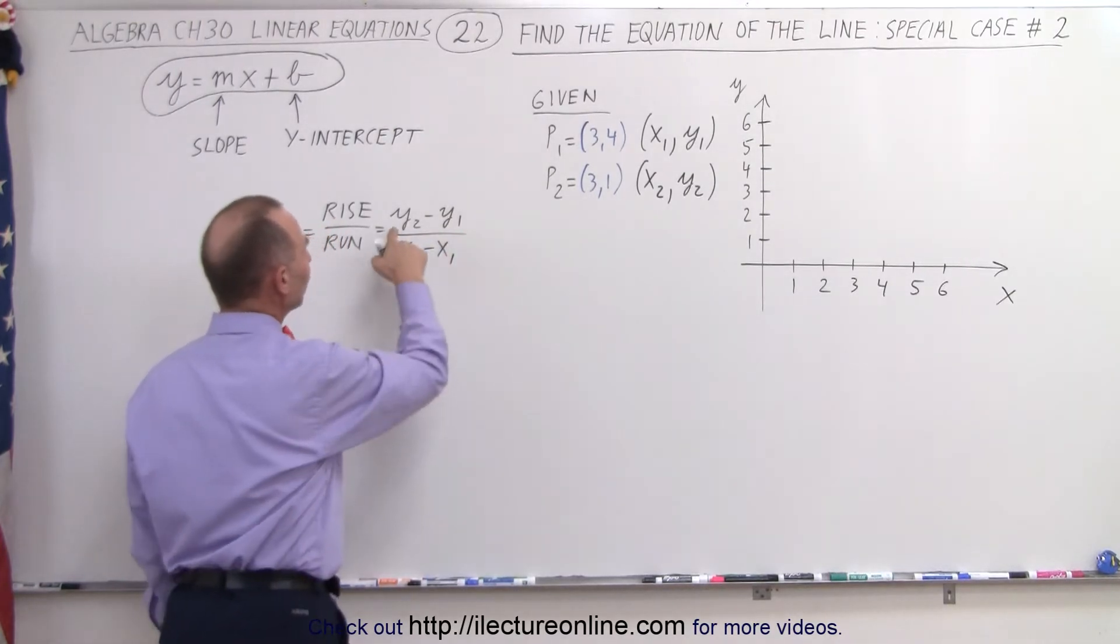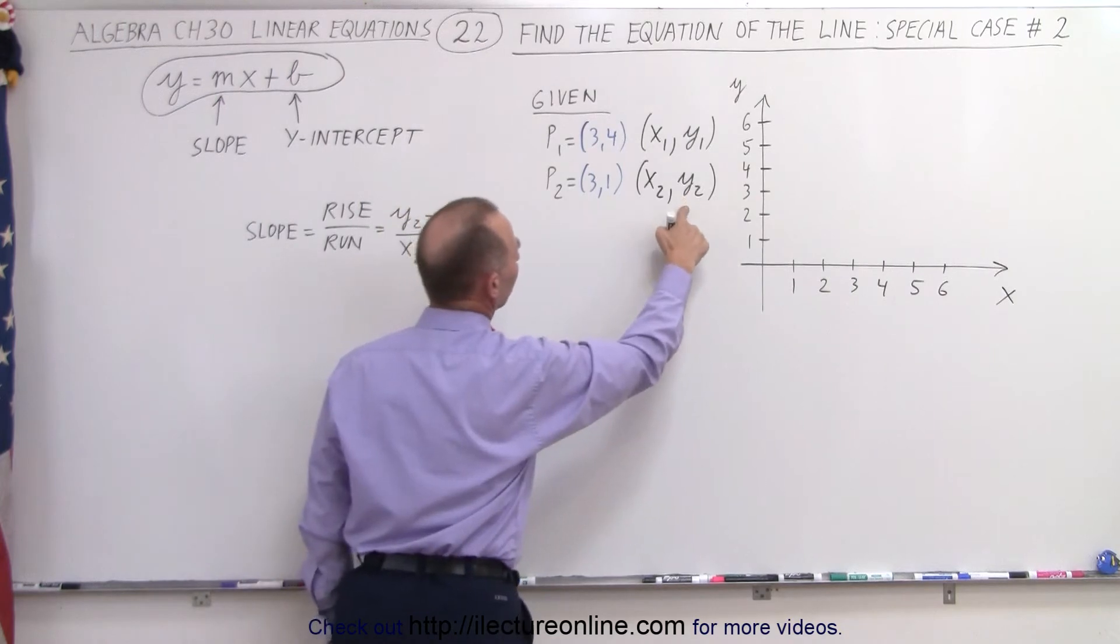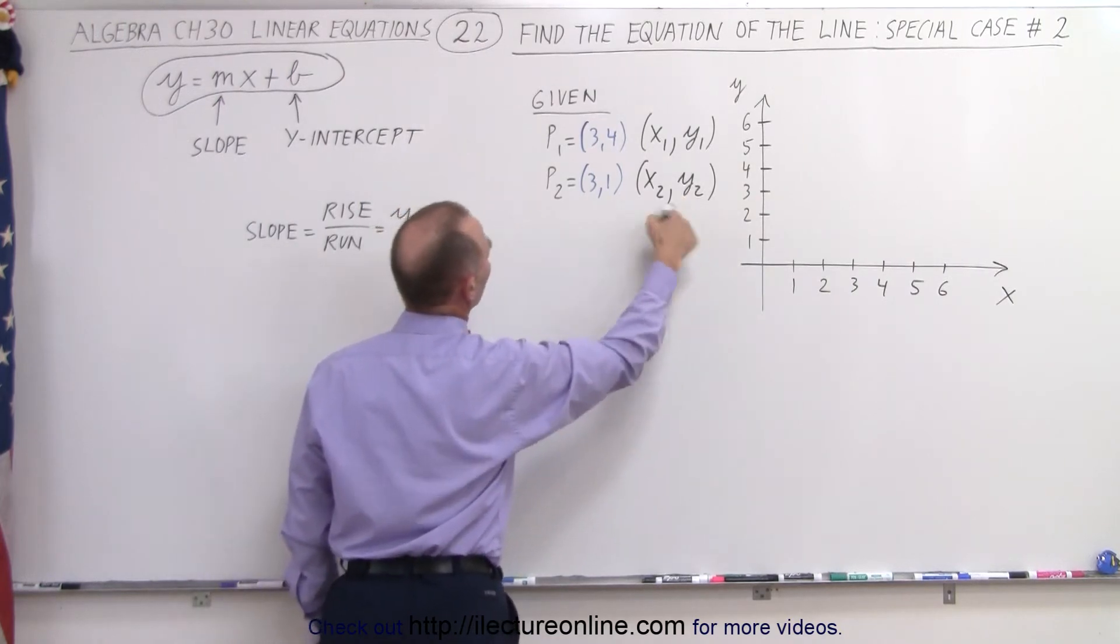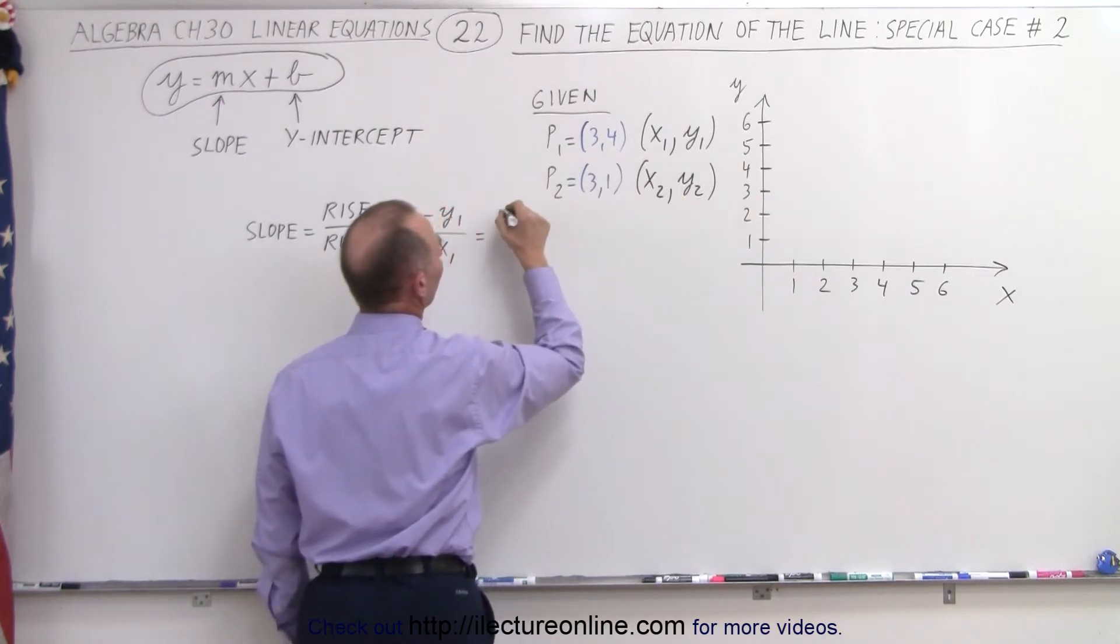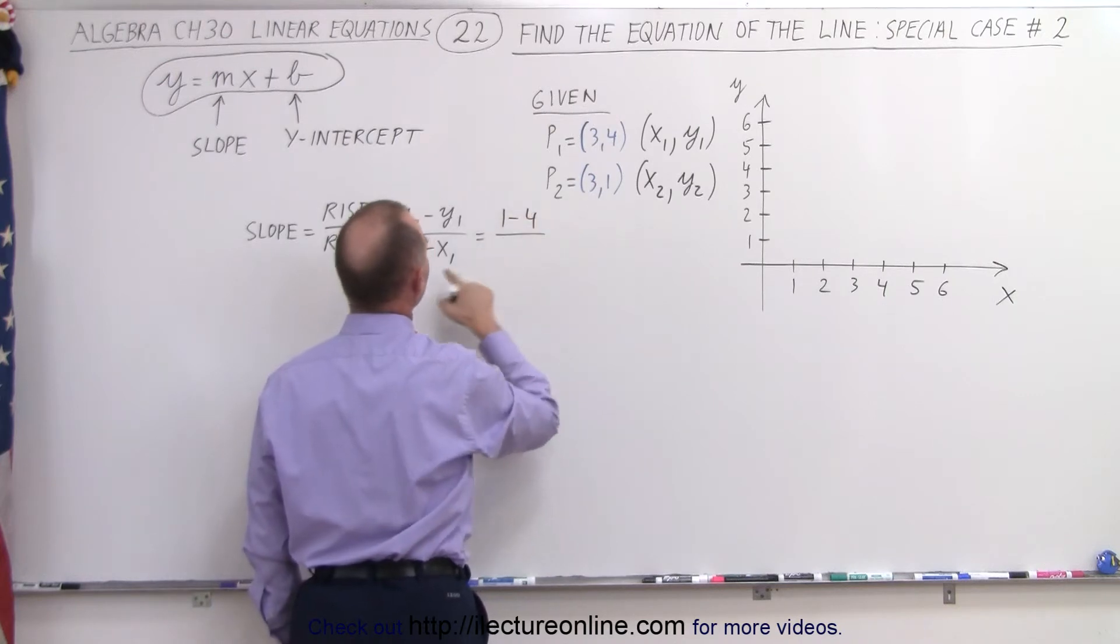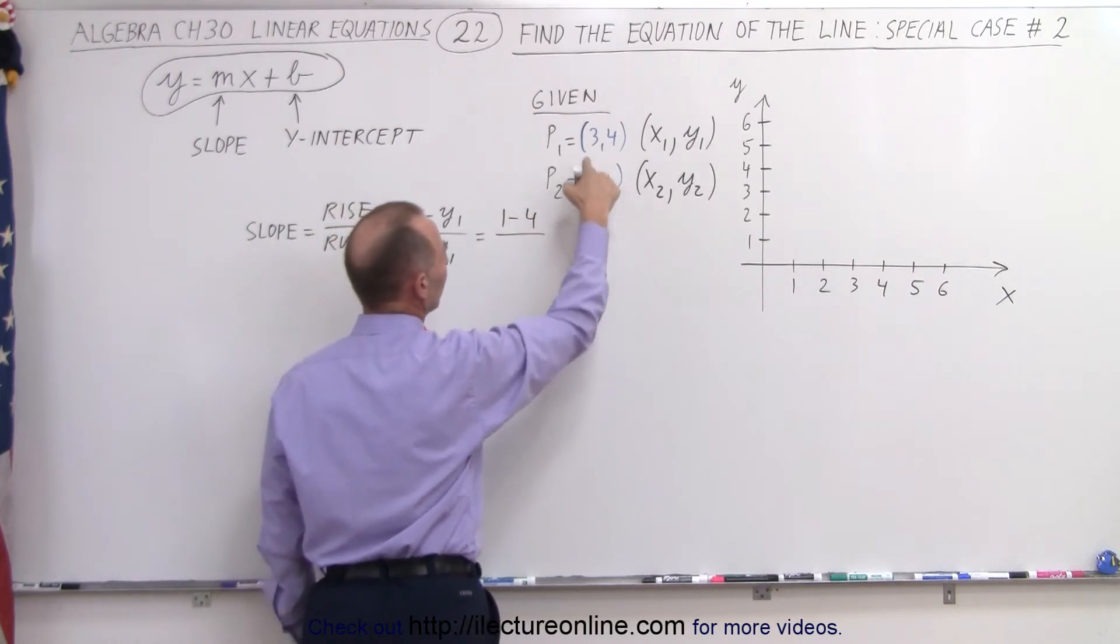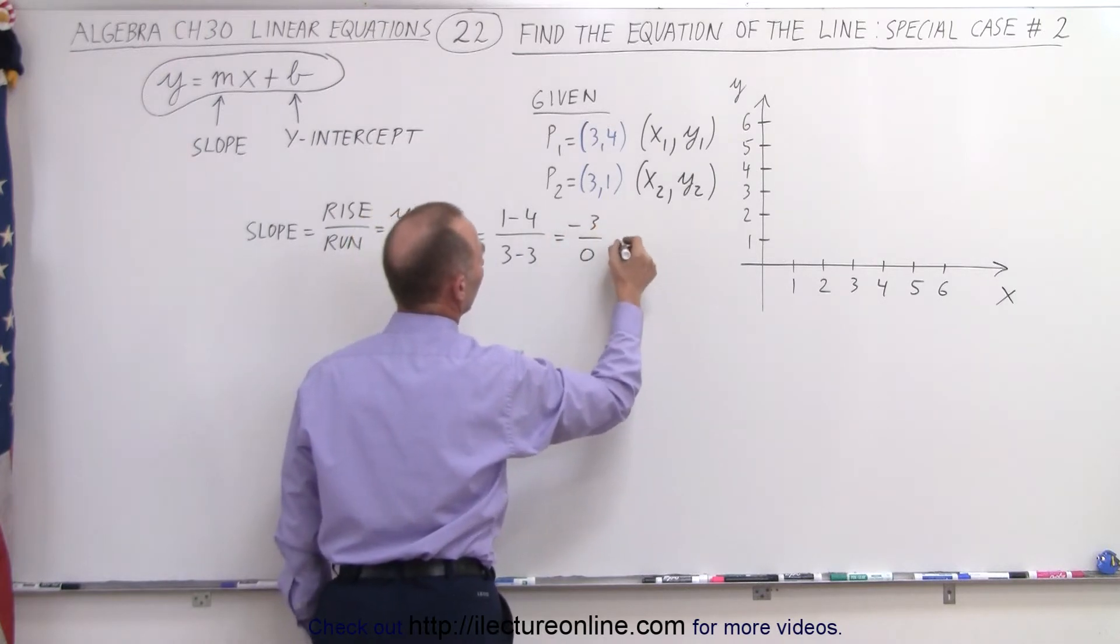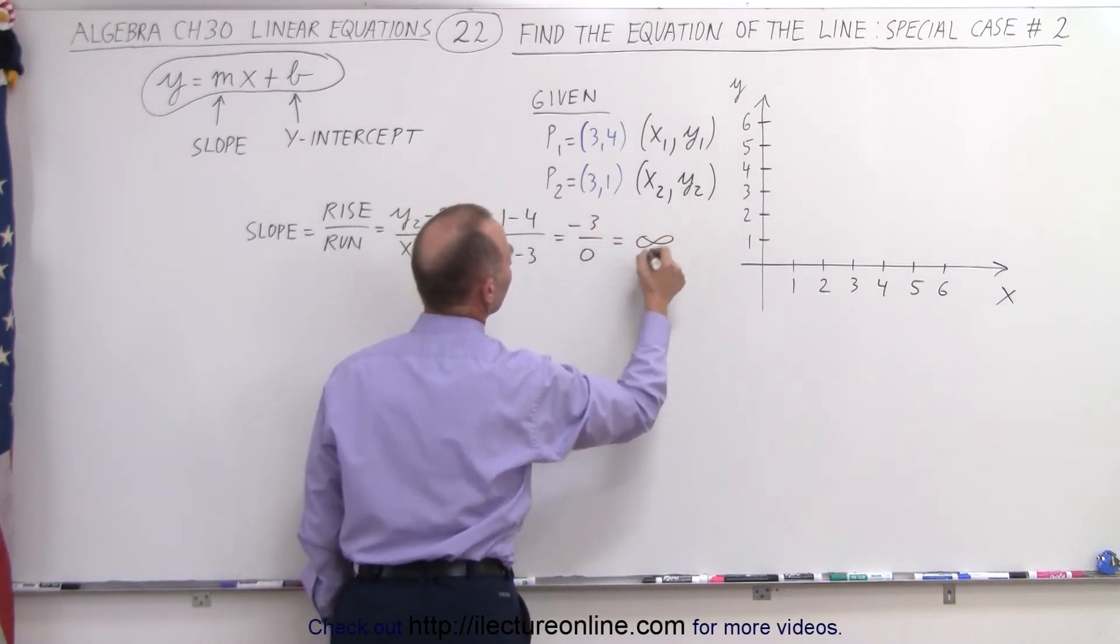So, y2 minus y1 goes in the numerator here, so that becomes y2 minus y1, so we have 1 minus 4 divided by x2 minus x1, which is 3 minus 3. And right away we realize we get minus 3 over 0, which is equal to infinity.